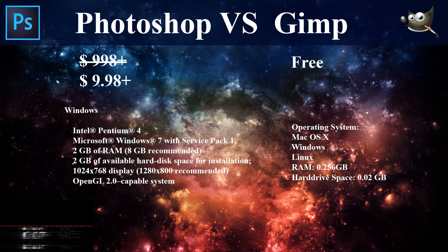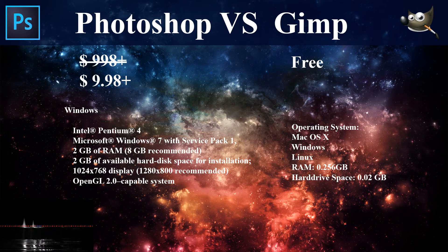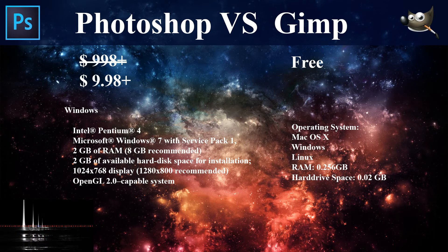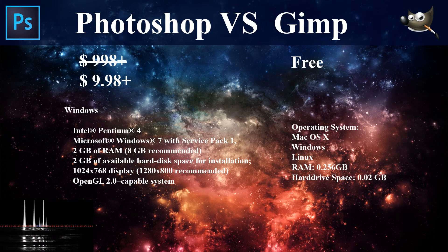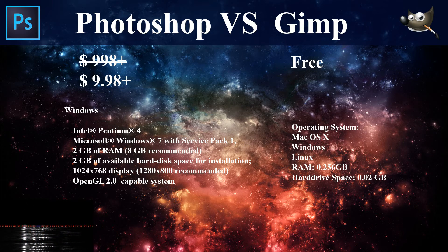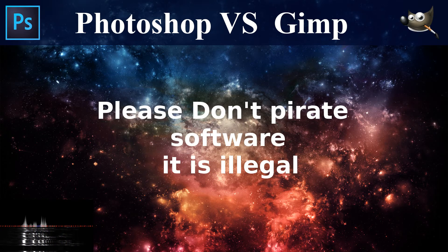GIMP is free, but because Photoshop costs money, Adobe is obligated to give you better support. You're in a license agreement with them and they have more obligations to you than the GIMP project does. With GIMP being free, you can't really hold them accountable if something goes wrong. Photoshop has more obligations. And knowing a lot of people that still end up pirating Photoshop anyway, so those users are also free.